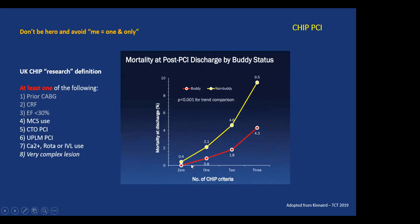Going from zero — which is regular PCI — to one CHIP factor, two, or three, mortality goes up to about 10% with three factors. If you include a buddy operator, meaning two interventionalists doing the procedure — not yet addressing involvement of the surgeon, anesthesiologist, etc., which might have even more benefit — you essentially halve the mortality. So you go from 10% to 5% simply by adding another pair of eyes, another set of hands, and another brain.